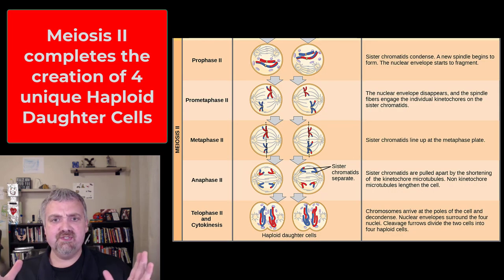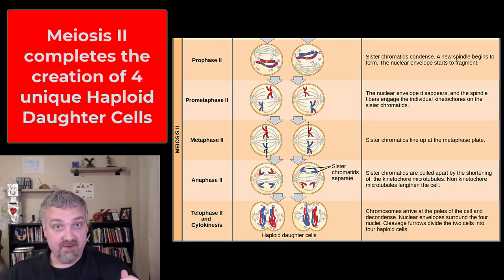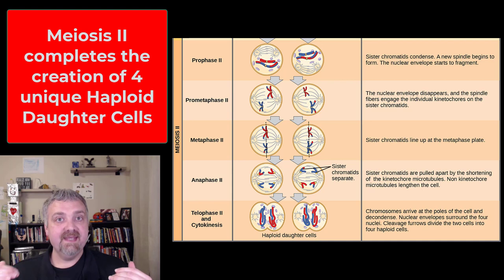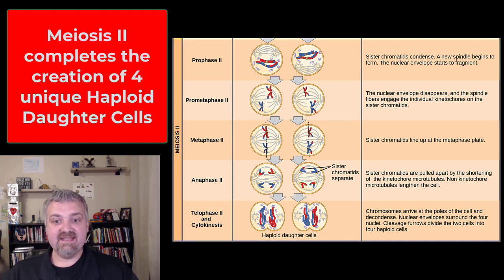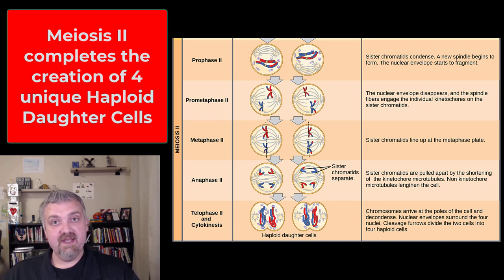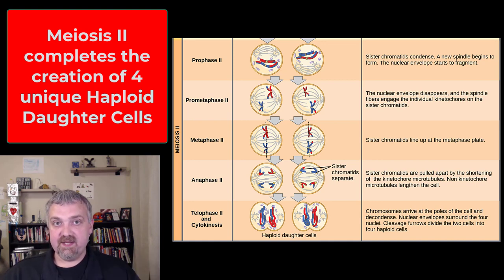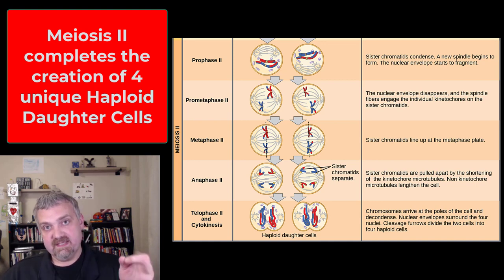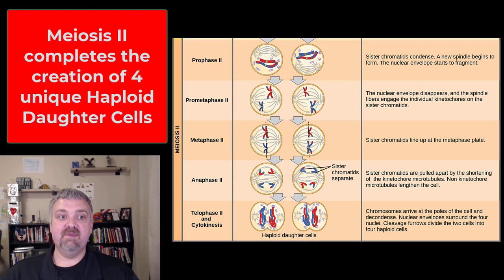Then we just have meiosis two — again, it just looks like mitosis. Prophase two, prometaphase two, metaphase two, anaphase two, telophase two, and then cytokinesis again. And here we end with four cells that are haploid with one set of chromosomes, instead of the diploid cells with mitosis.